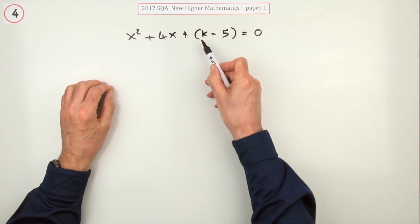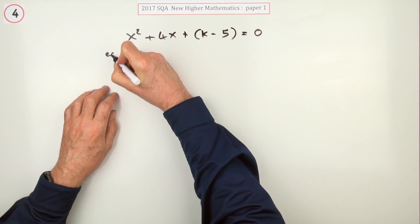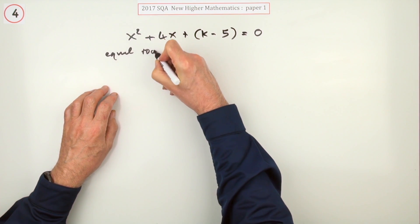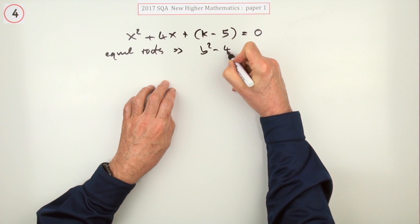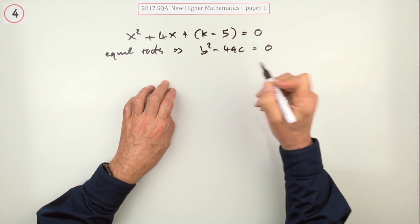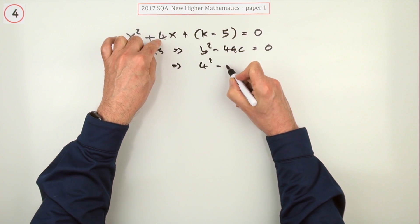Still, I'll just go through it. I think they're expecting you to write this down, then you're expecting to write down equal roots means that the discriminant b² minus 4ac should be zero.